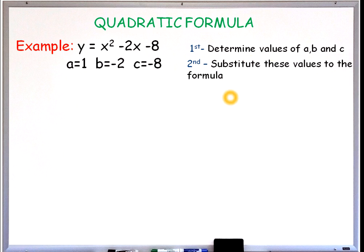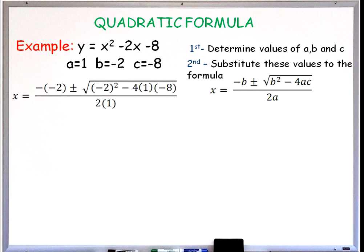Second, we have to substitute these values into the formula. The quadratic formula is given by x is equal to negative b plus or minus the square root of b squared minus 4ac, over 2a. Substituting the values, we have x is equal to negative negative 2 for b, negative 2 squared for b squared, 4 times a which is 1, c which is negative 8, and 2 times a which is 1.